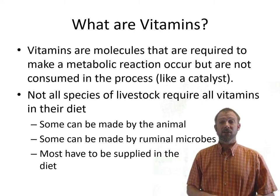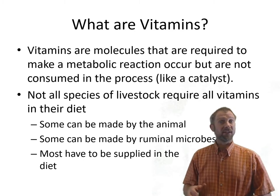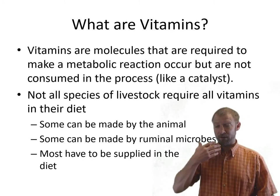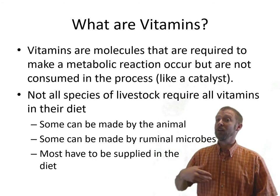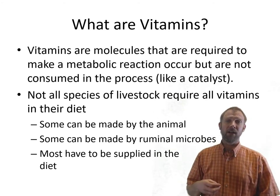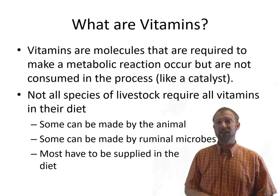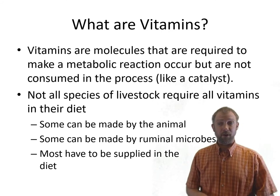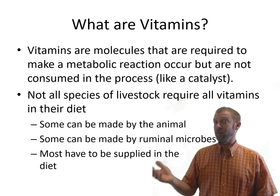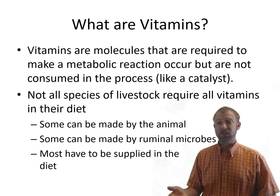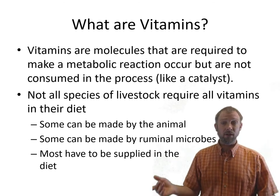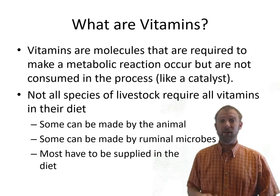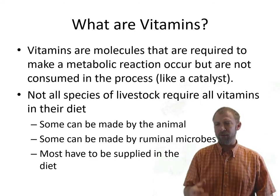Not all species of livestock require all vitamins in their diet — some can be made by the animal. Vitamin C, for example, can be made by pigs. Pigs have no requirement for vitamin C in their diet because they can produce it themselves. Many vitamins can also be produced by the ruminal microbes; vitamin B12, for example, can be made as long as we supply enough cobalt and the building blocks for the bacteria.